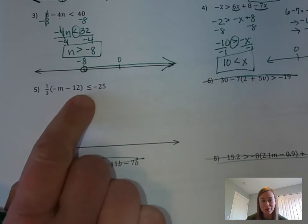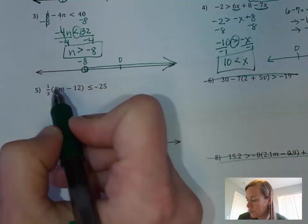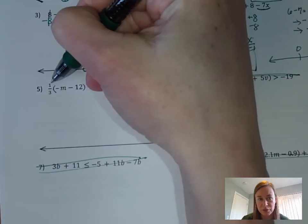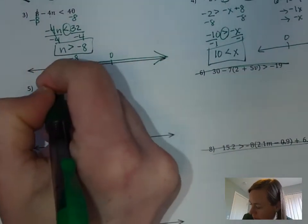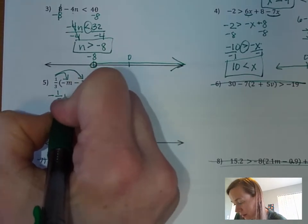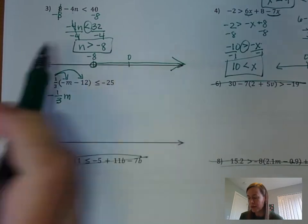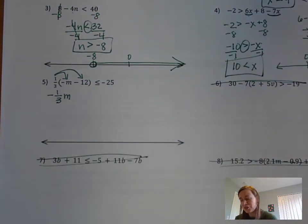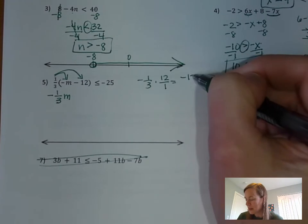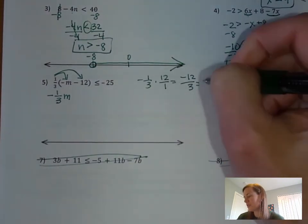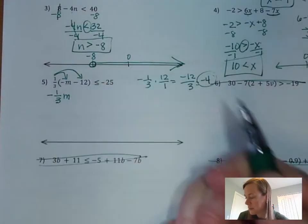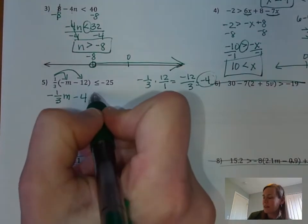Number 5 has a fraction distributed through parentheses: one-third times the quantity negative m minus 12. We need to get rid of the parentheses by distributing the one-third. One-third distributes to negative m and to negative 12. One-third times negative m is negative one-third m. One-third times negative 12 — using your calculator or fractions: negative 12 divided by 3 is negative 4. So one-third times negative 12 is negative 4.